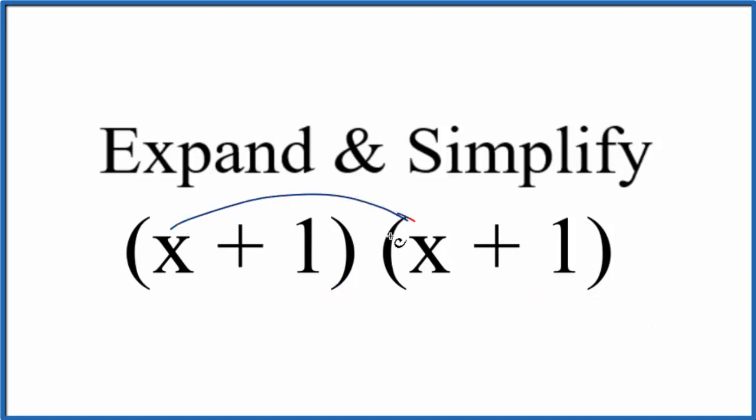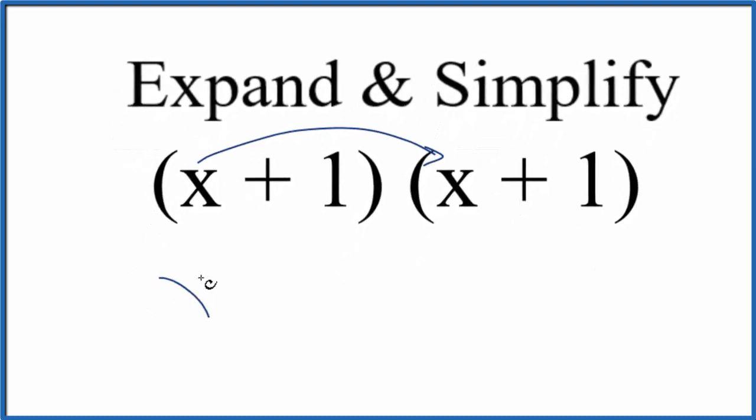We'll take this x, multiply it by the first term here, x times x, that gives us x squared.